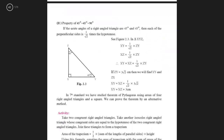There is another property for the 45-45-90 degree triangle. If you have a right angle triangle where the other two acute angles are 45 and 45 degrees each, then each of those perpendicular sides is 1 by root 2 times the hypotenuse. That is, in triangle XYZ with angle X equal to 90 degrees and both angle Y and Z equal to 45 degrees, XY equals XZ equals 1 by root 2 times YZ.